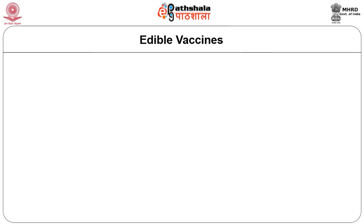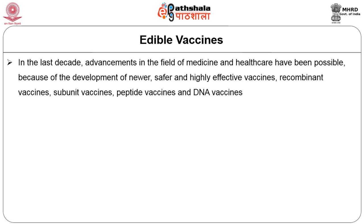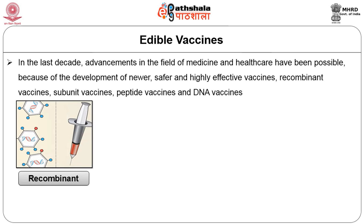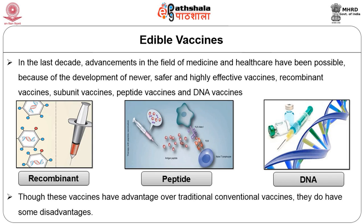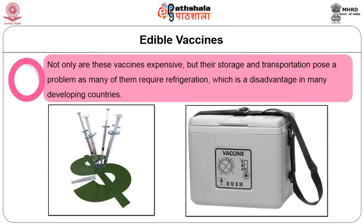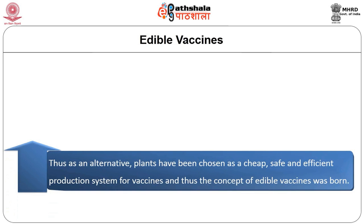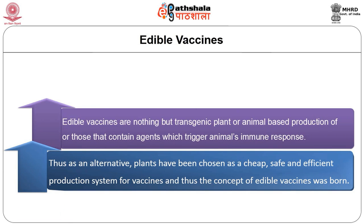Now let us first look into the topic of edible vaccines. In the last decade, advances in medicine and healthcare have been possible due to development of newer, safer and highly effective vaccines — recombinant vaccines, subunit vaccines, peptide vaccines and DNA vaccines. Though these vaccines have advantages over traditional conventional vaccines, they do have some disadvantages. Not only are they very expensive, but storage and transportation pose a problem, as many require refrigeration — a disadvantage in many developing countries. Thus, plants have been chosen as a cheap, safe and efficient production system for vaccines, and the concept of edible vaccines was born.